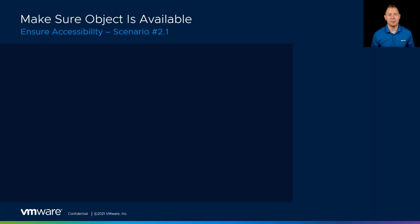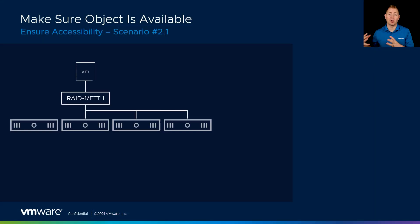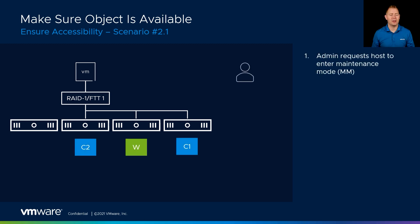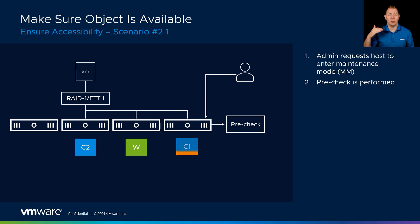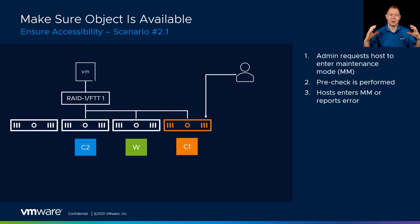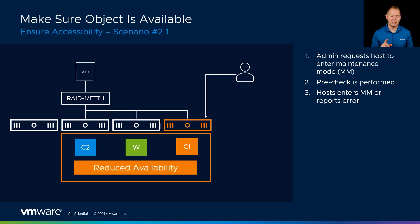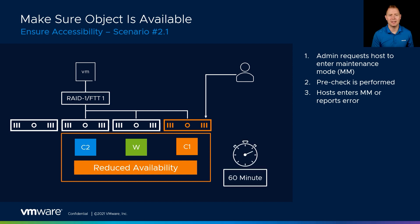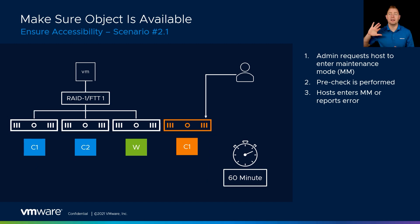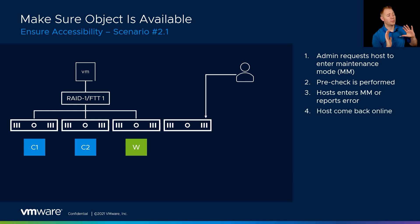Let's go through a couple more examples with ensure accessibility before moving on to the no data migration option. In our next example, we've got a four-node cluster. Our administrator puts a host in maintenance mode, we perform our pre-check, and we put that witness component in an absent state, causing our object to be in a reduced availability state. While that host sits in maintenance mode, vSAN starts a 60-minute timer — if this host does not come back within 60 minutes, it will kick off a re-sync and move that data over to that fourth host. If it's been two or four hours and host four comes back online, it says the data has already been put on another host, so that's fine — we've already cut over to it.